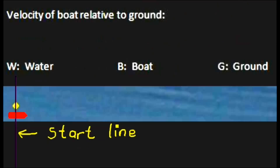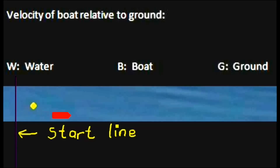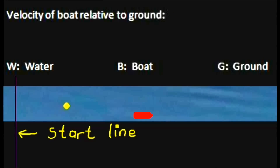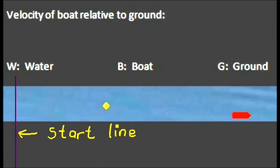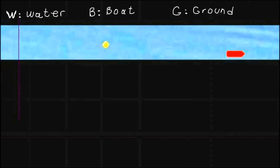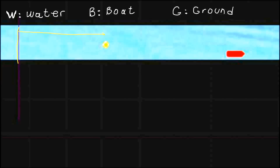In this case, what is the velocity of the boat relative to the ground? As you can see, the boat and the wood start at the same start line and move at the same time. Let's take a snapshot here. This is the start line, and this vector is the velocity of water relative to the ground.